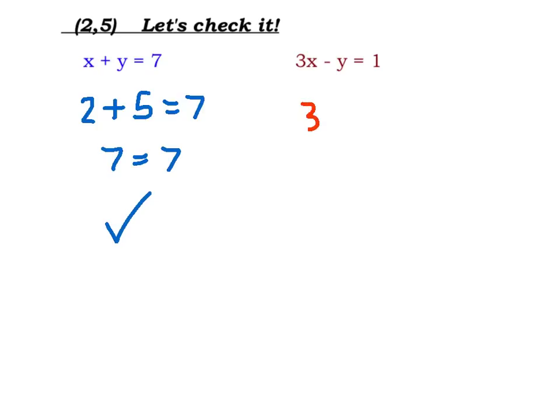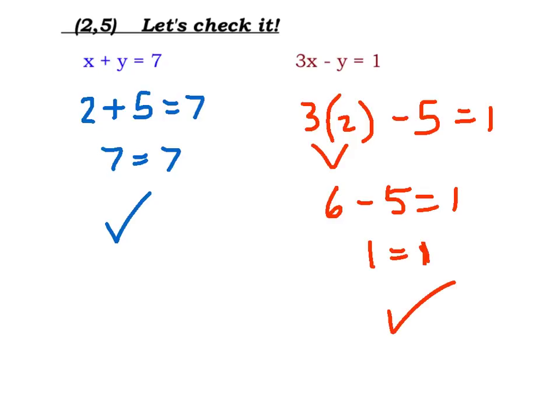In my second equation, 3 times my x value minus my y value hopefully will equal 1. 3 times 2 is 6, 6 minus 5 is equal to 1, 1 equals 1, boom, checks out.